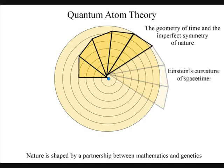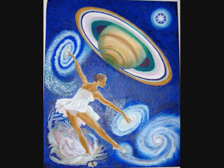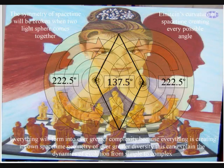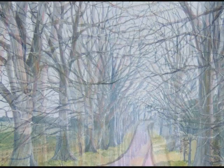of organic and non-organic matter, from spiral galaxies to seashells, to the DNA of life itself. Everything will form into ever-greater complexity, because everything is creating its own space-time geometry of ever-greater diversity. Therefore, we see fractional self-similarities appearing at every angle and degree of creation.